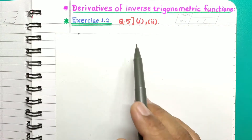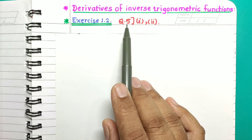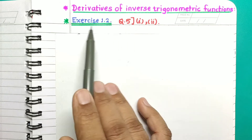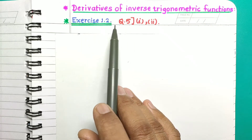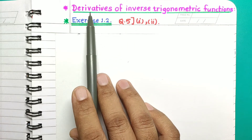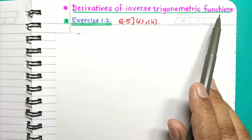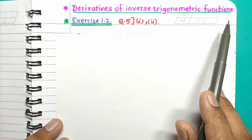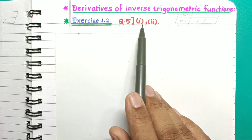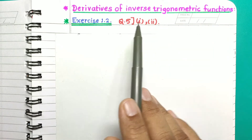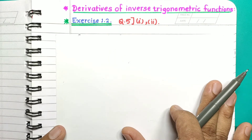Hi students, in this session we are going to solve question number 5 from exercise 1.2, which is based on derivatives of inverse trigonometry functions. This question contains two sub-questions, so let us solve it.